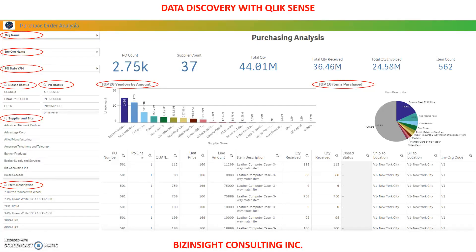At the bottom, we have a data table to show data specific to a purchase order — purchase outline, quantity, item, and descriptions.